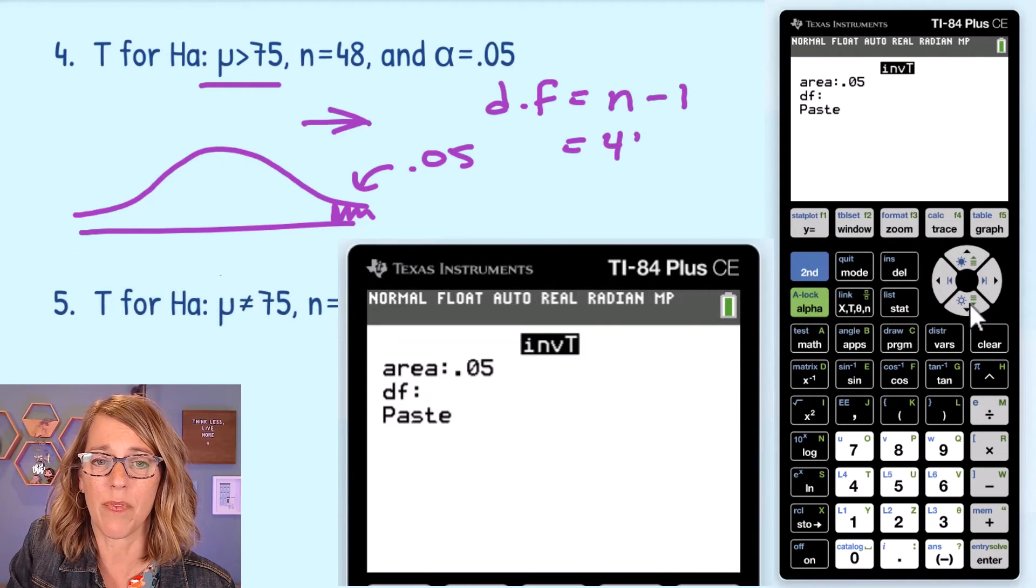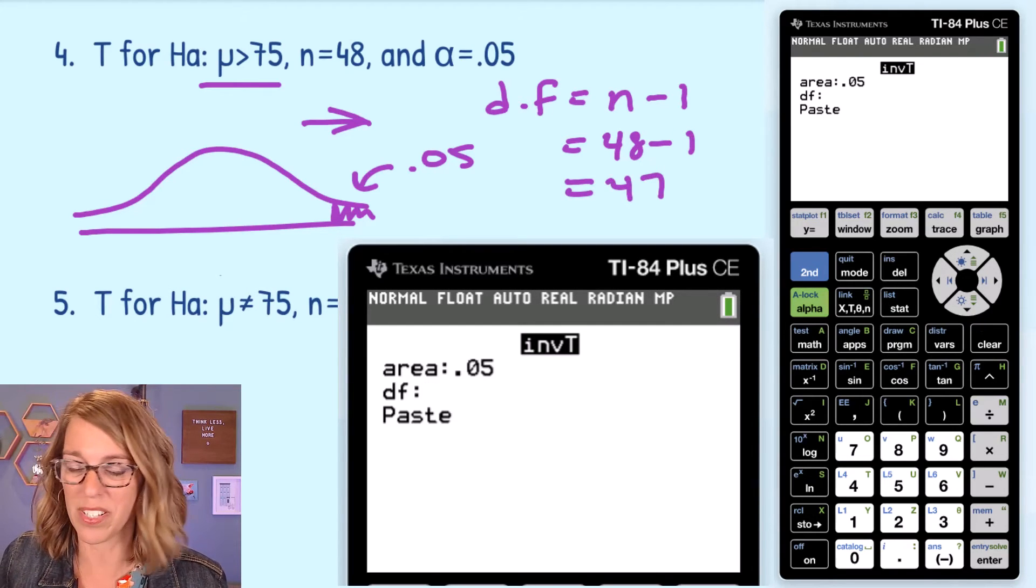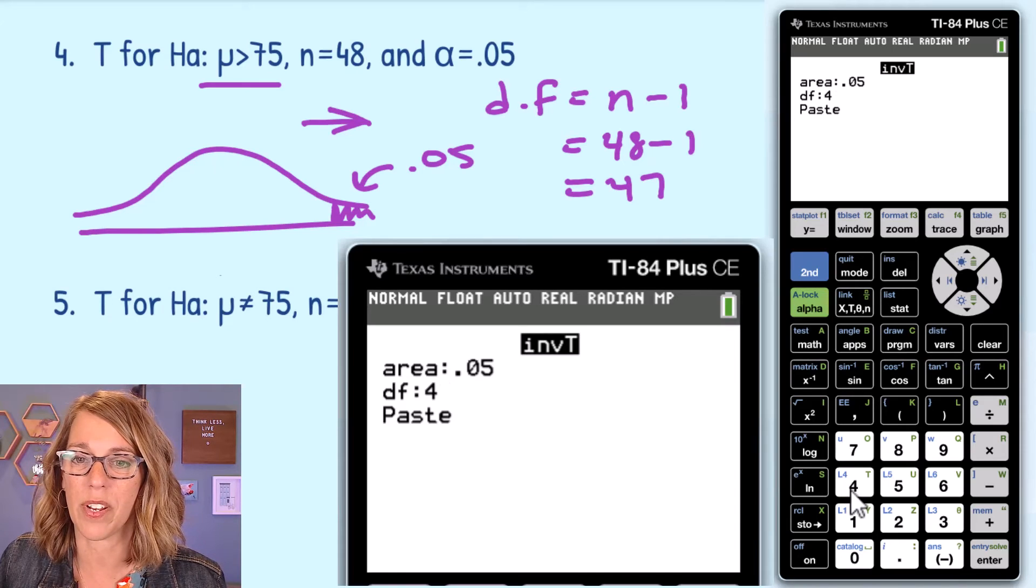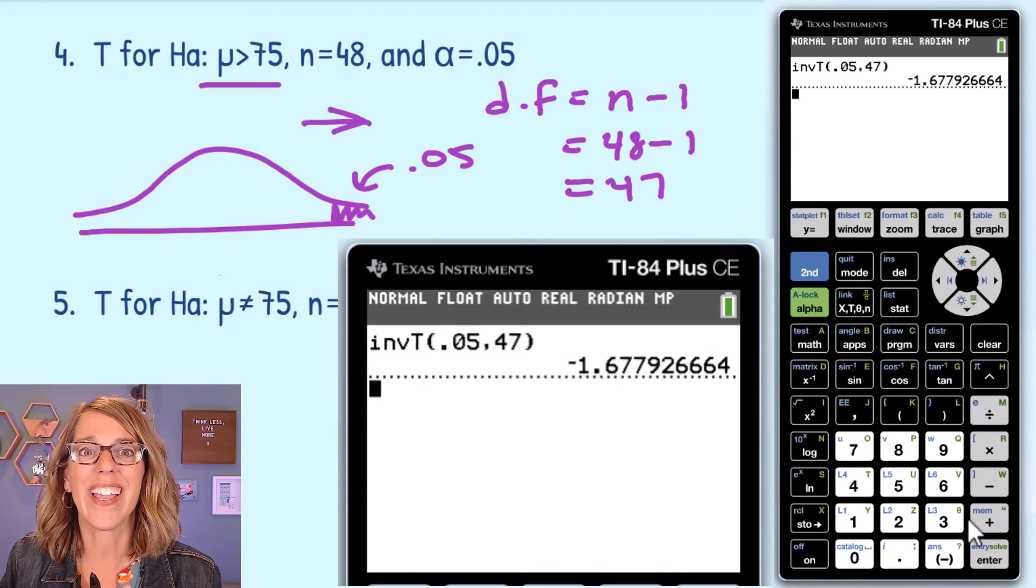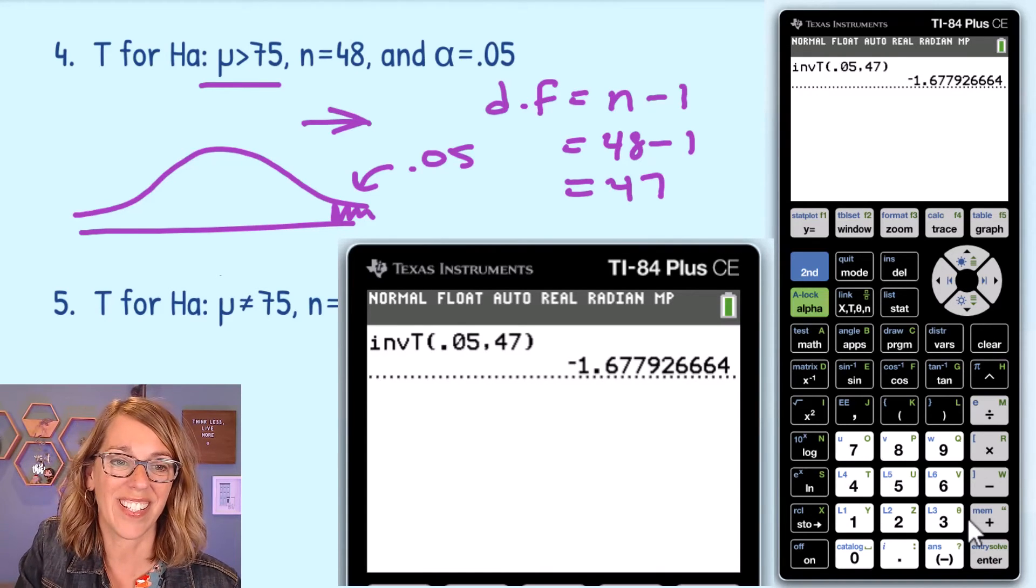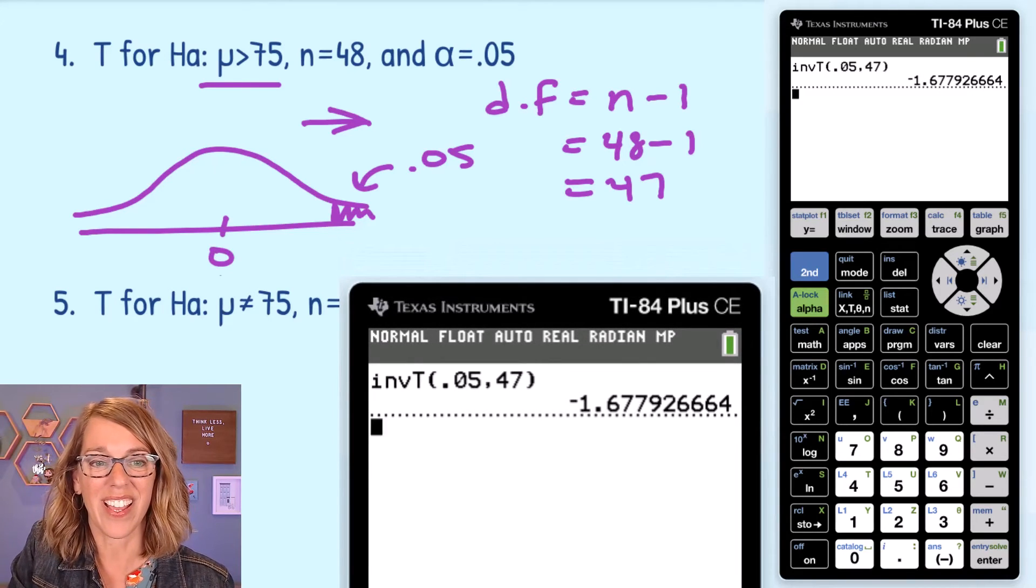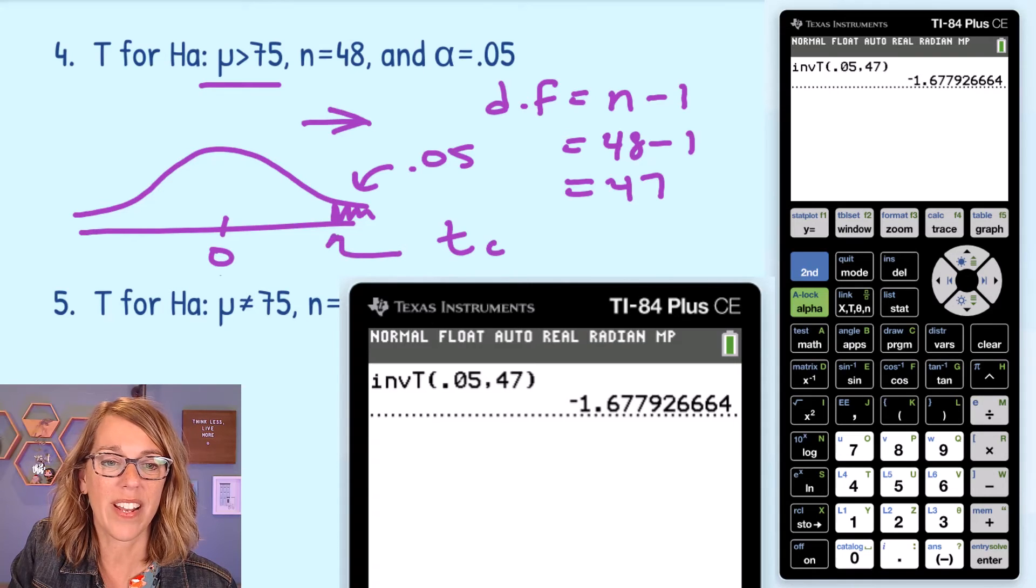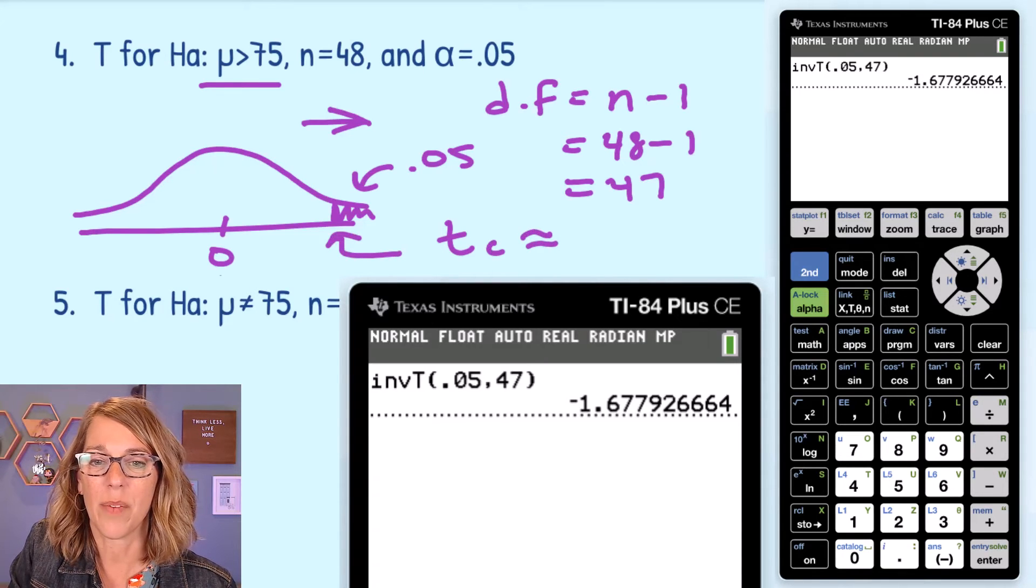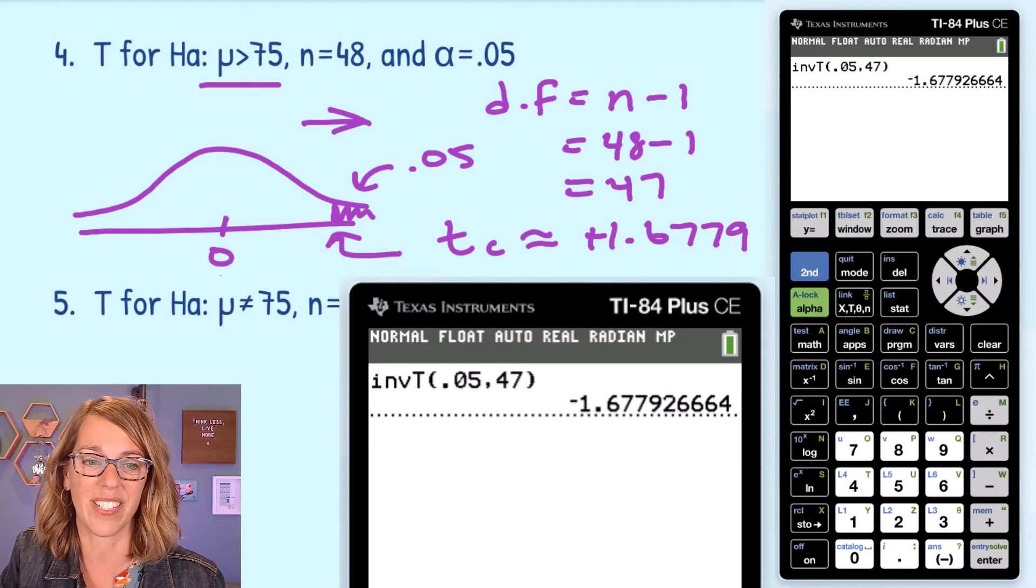In this case, it's going to be 48 minus 1, or 47 degrees of freedom. So I'm going to type in 47 for my degrees of freedom. And then paste. And it's going to give me that area, again, on the left-hand side, since that's all the calculator can do. But I know better. This is on the right-hand side. So that critical t value, which lives right there at that cutoff, is approximately positive 1.6779.